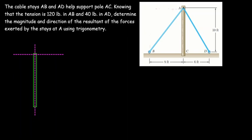Hello everyone, welcome to this lesson. In this video we are going to solve this question on the screen. The question says: the cable stays AB and AD help support pole AC. Knowing that the tension is 120 pounds in AB and 40 pounds in AD, determine the magnitude and direction of the resultant of the forces exerted by the stays at A using trigonometry.